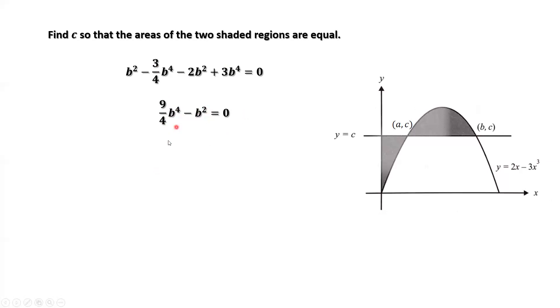Factoring the left-hand side, we have b squared times 9 over 4b squared minus 1. We have three solutions for b. b equals 0, b equals plus minus 2 over 3. Because b is bigger than 0, this implies b equals 2 over 3.